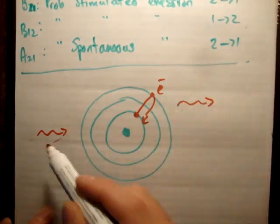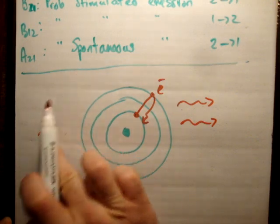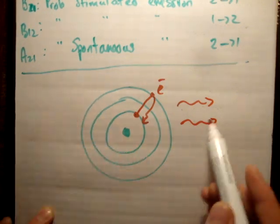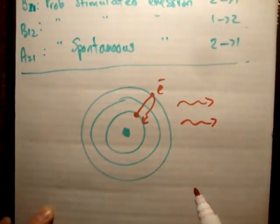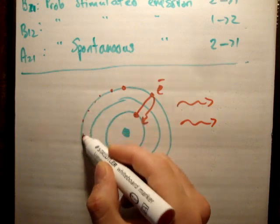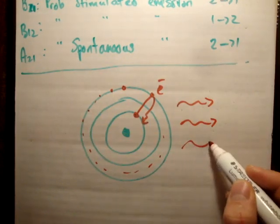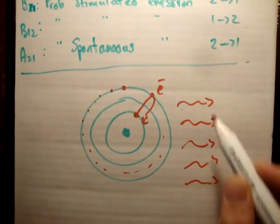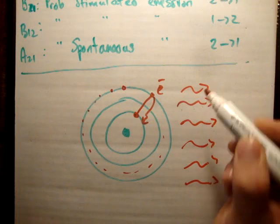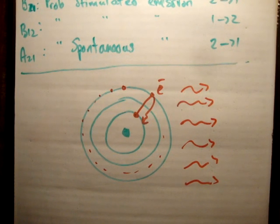You have the emitted photon and the nearest or incident photon, and as a result you'll have two photons. So you can imagine if you have a number of excited electrons, you're going to have a big pile of radiation being emitted, all coherent and in phase and at the same time. So that's how you get your laser beam.